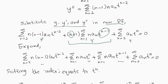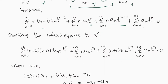Next we shift the index to equate everything to t^n. For y'', since we have power n-2, we add 2 to shift: it becomes Σ(n=0 to ∞) (n+2)(n+1)·aₙ₊₂·tⁿ — the starting index decreases because n+2=2 gives n=0. For the third term (from 1·y'), adding 1 gives Σ(n=0 to ∞) (n+1)·aₙ₊₁·tⁿ. The second and fourth terms remain unchanged.